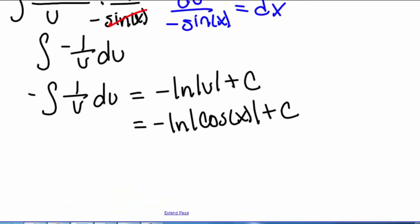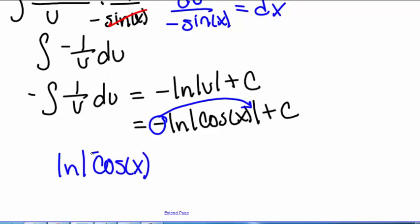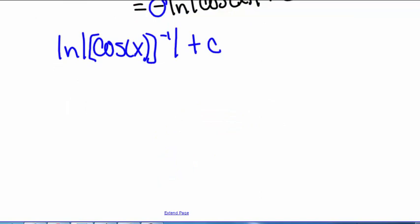There's also another way to write this using our properties of logarithms. So this negative sign can be distributed to give us the natural log of the absolute value of cosine of x to the negative 1, and then plus c. And so cosine of x to the negative first power is 1 over cosine of x.